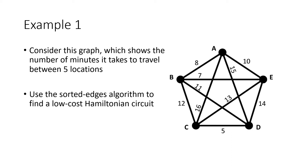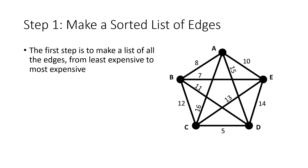In this example, we have a graph showing the number of minutes it takes to travel between five locations — A, B, C, D, and E — and we want to use the sorted edges algorithm to find a low-cost Hamiltonian circuit. The first step is to make a sorted list of edges from lowest cost to highest cost. The graph has a lot of numbers on it, so we'll be methodical and look at all those numbers to find the lowest.